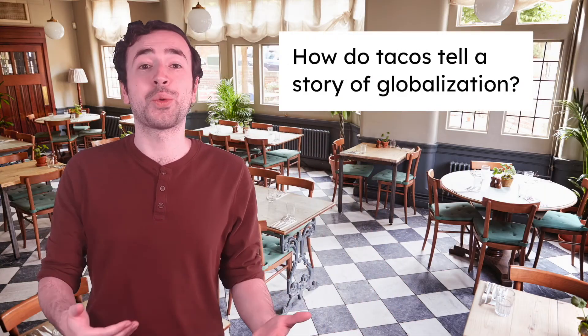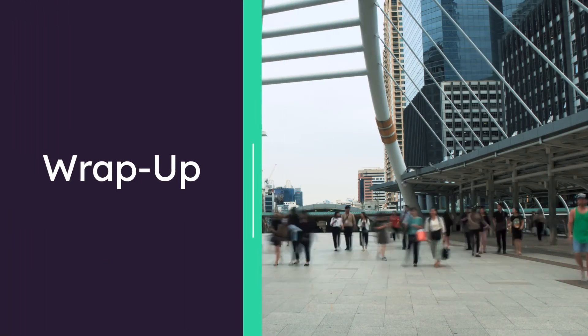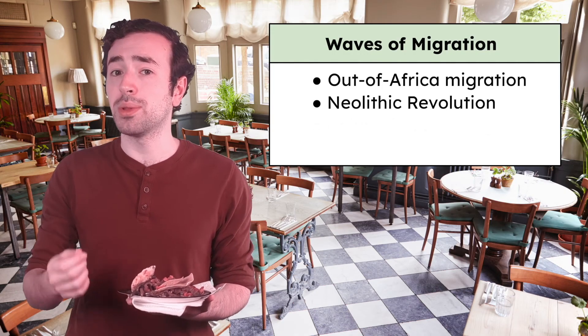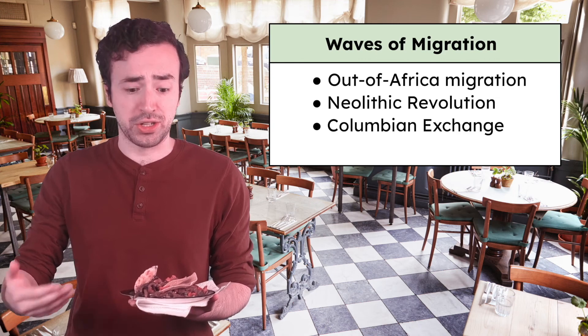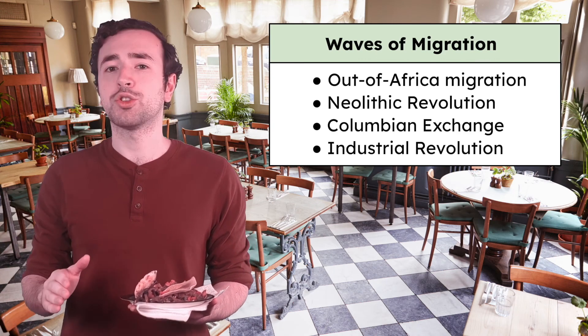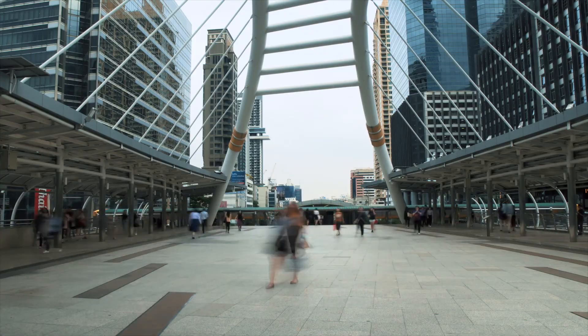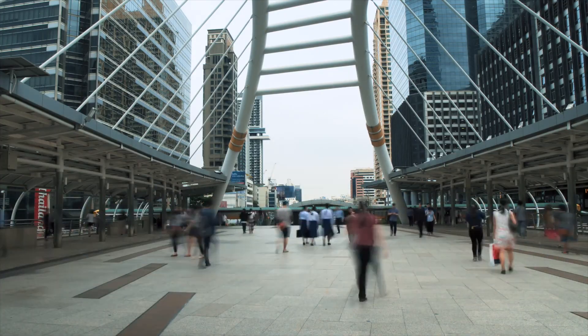So let's finally answer the question we started this lesson with: how do tacos tell a story of globalization? These tacos tell a story of migration throughout human history — from migration out of Africa, to spreading agriculture in the Neolithic Revolution, to global movements of goods and people in the Columbian Exchange, to international migration of the Industrial Revolution. All of these waves of migration contributed to a globalizing world and made it possible to eat this dish. Migration is responsible for all the diverse cultures and resources in our daily lives, and it's clear migration has always been a part of our human history. Is migration just as widespread and important in our world today?